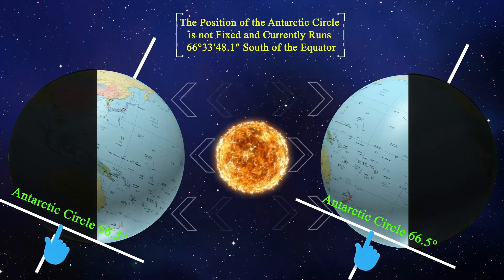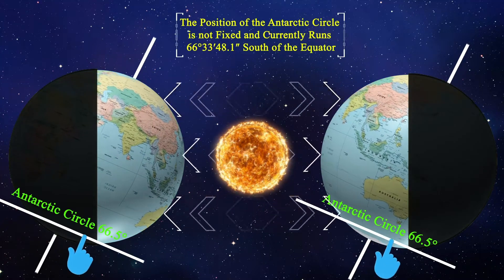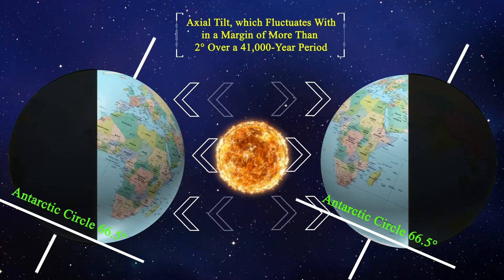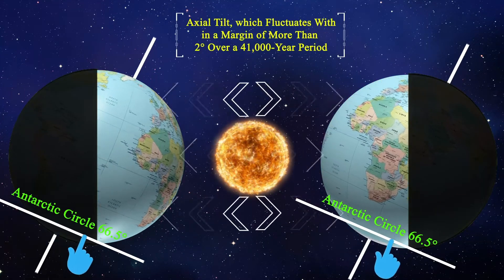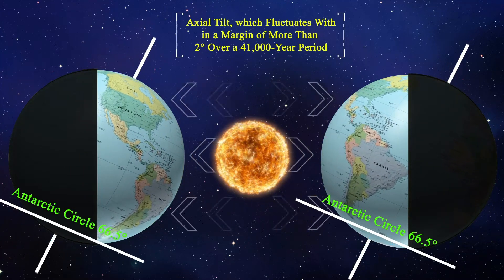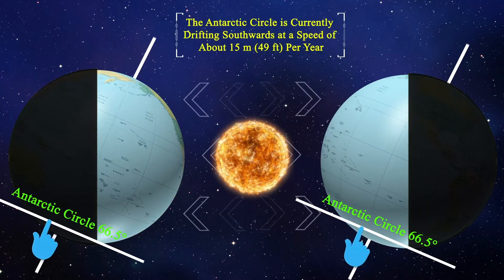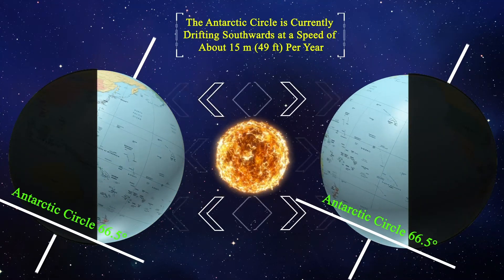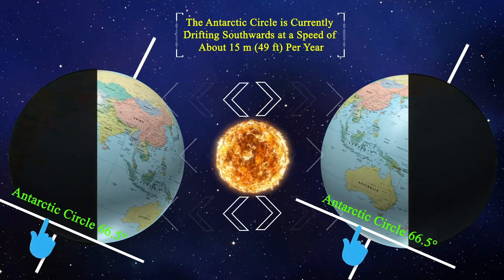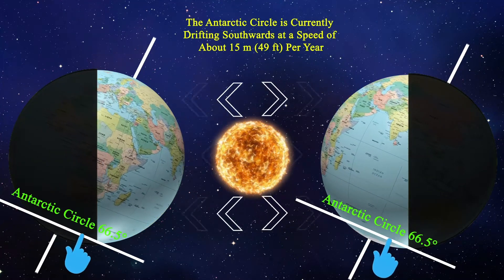The position of the Antarctic Circle is not fixed, and currently runs 66 degrees 33 minutes 48.1 seconds south of the equator. Its latitude depends on the earth's axial tilt, which fluctuates within a margin of more than two degrees over a 41,000-year period due to tidal forces from the orbit of the moon. Consequently, the Antarctic Circle is currently drifting southwards at a speed of about 15 meters (49 feet) per year.